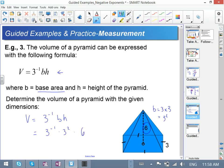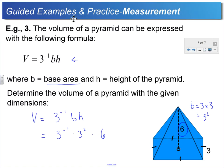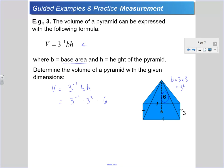I'm going to take advantage of some exponent rules to make the mathematics easier. Three to the minus one times three to the two—I can add the exponents because of multiplication—and then times by six. That would be three to the one, which is three times six, or eighteen cubic units.